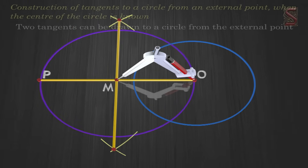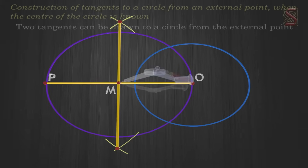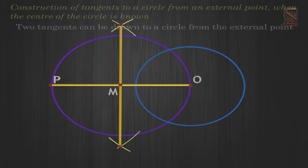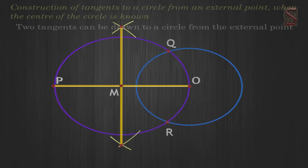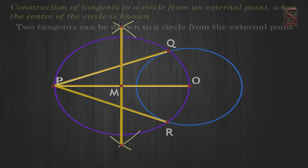Step 3: Taking M as center and MO as radius, draw a circle. Let it intersect the given circle at the points Q and R. Step 4: Join PQ and PR. Then PQ and PR are the required two tangents.